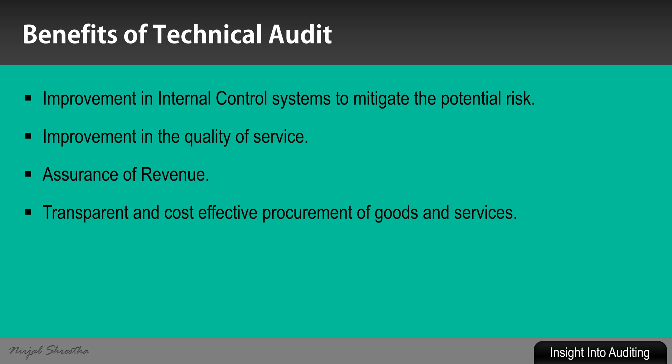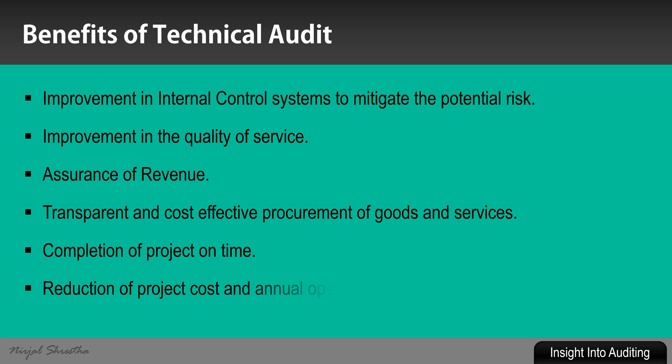Technical auditing locates hurdles in project implementation and reports them to management for correction, which results in completion of the project on time. Any shortcoming in implementation efficiency or wastage controls are detected by technical auditing, helping in the reduction of project cost and annual operating cost.